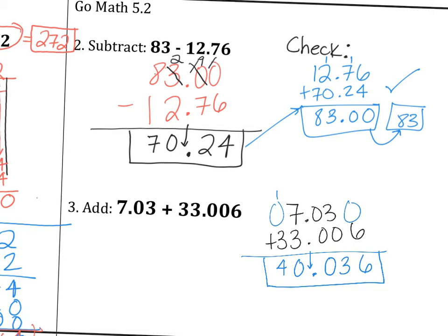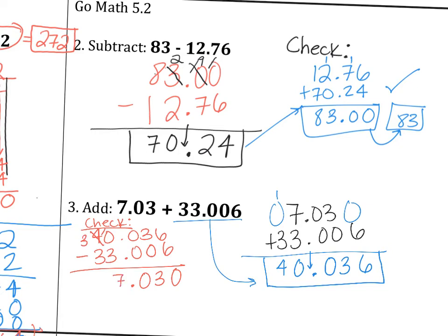Another way you can check this is you can subtract either this one from that or the 7 from that. I'm going to do the one that I told you. So we have 40.036 minus 33.006. 6 minus 6 is 0. 3 minus 0 is 3. 0 minus 0 is 0. 0 minus 3, can't do that. 10 minus 3 is 7. 3 minus 3 is 0. So my answer is 7.030. Would you look at that? That's up there. So we got the right answer. And again, the answer is this one right here. When we're checking, we're just trying to make sure that we found the right answer.